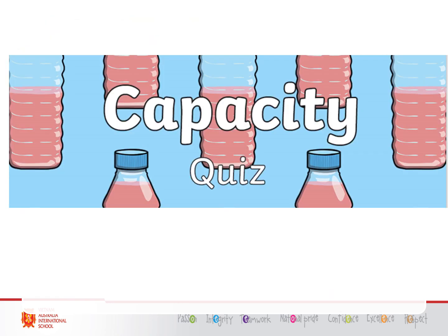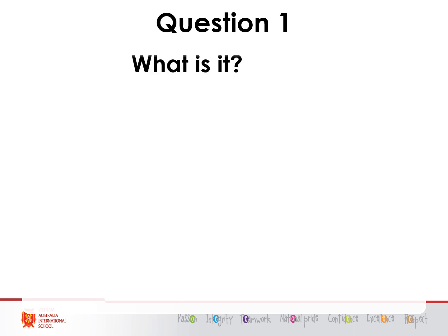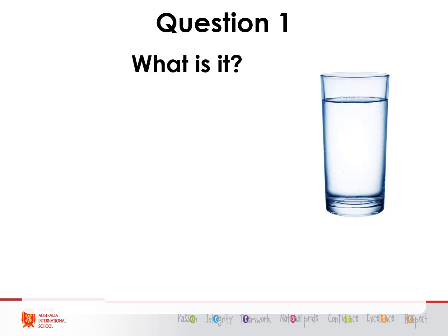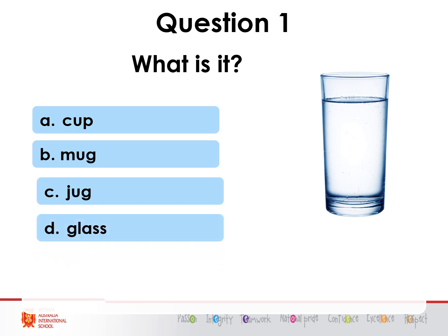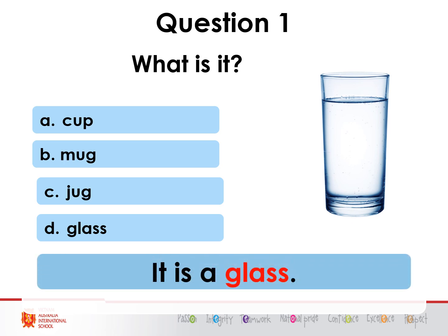Are you ready for a quiz? We're going to do a capacity quiz. Question one — what is it? A) a cup, B) a mug, C) a jug, D) a glass. What do you think? Five seconds: one, two, three, four, five. I hope you got this right — it is of course a glass. That's D.